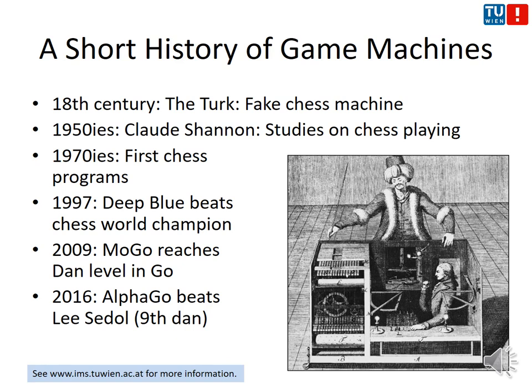There was then a big gap until the 1950s, when first scholars started to develop ideas of what algorithms could look like. One of them was Claude Shannon, famous for his works on information theory and the Shannon entropy formula. He worked at Bell Laboratories and also did theoretical studies on playing chess. The first chess programs on computers emerged in the 1970s — at that time very weak. I remember playing against early machines in the mid-to-late 1980s, and those were usually easy to beat on normal computer hardware.